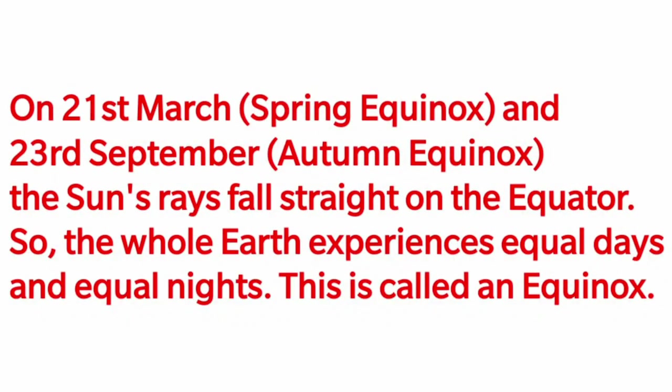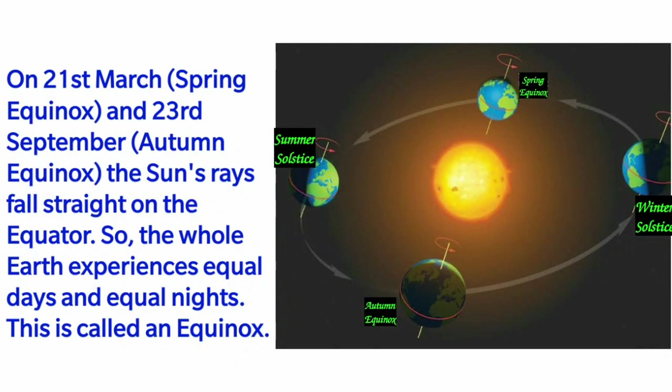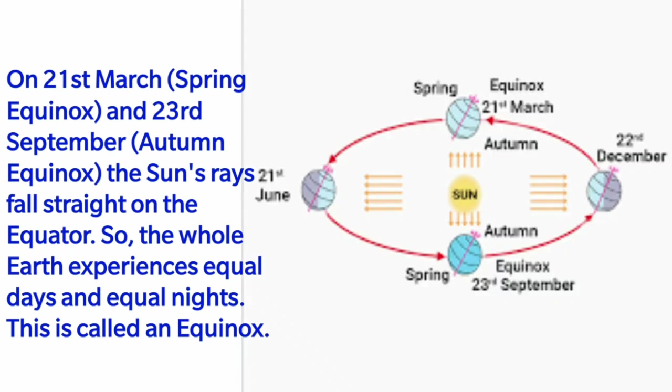On 21st March and 23rd September, the sun's rays fall straight on the equator. At this time, the north and south poles are not tilted towards the sun.